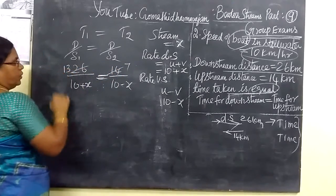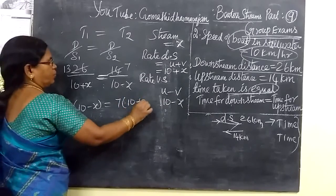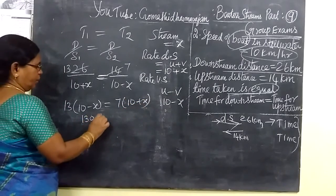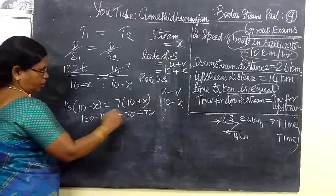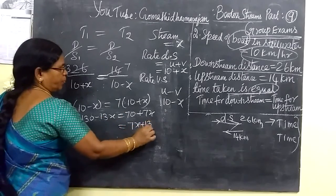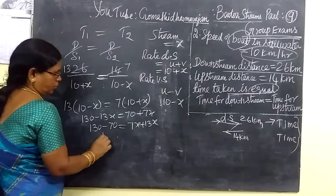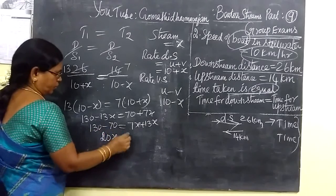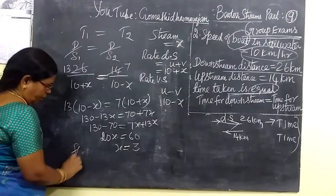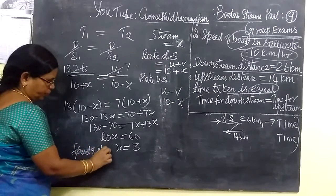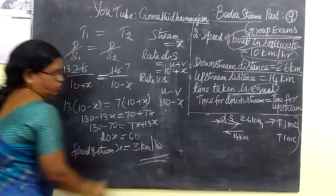Cross multiplying: 26 times (10 minus S) equals 14 times (10 plus S). So 260 minus 26S equals 140 plus 14S. Rearranging: 260 minus 140 equals 14S plus 26S, giving 120 equals 20S. Therefore S equals 3. So the speed of the stream is 3 kilometres per hour.